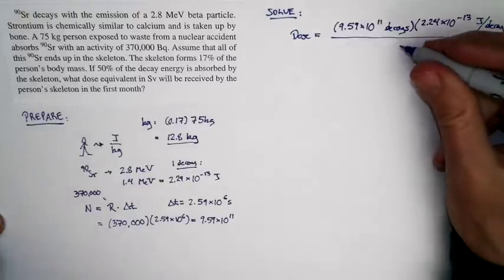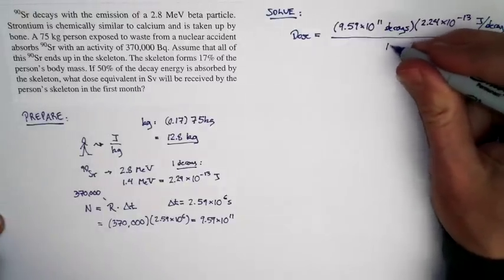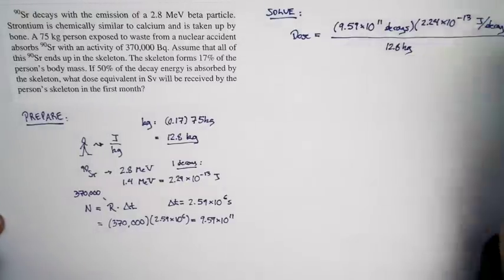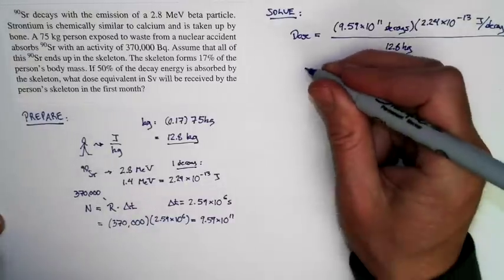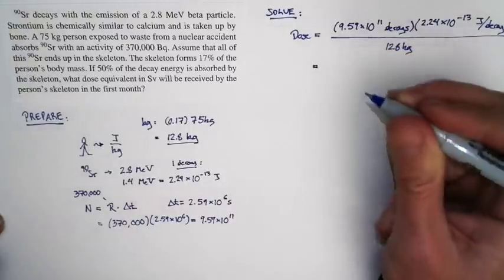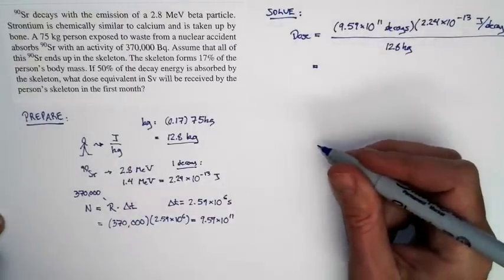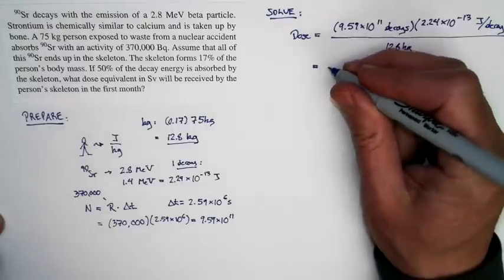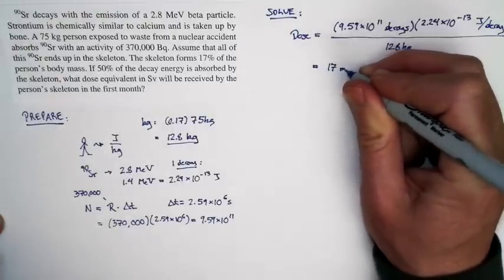And the mass of the skeleton is 12.8 kilograms. So we have everything we need to calculate the dose. And if we do that, for the dose we get the following: 17 milligrays.